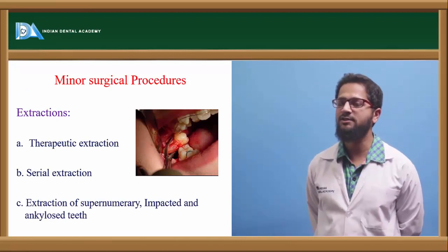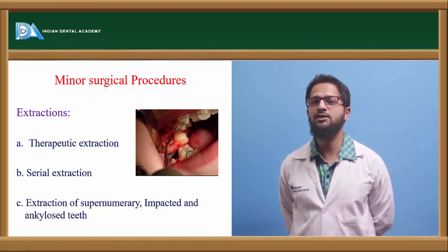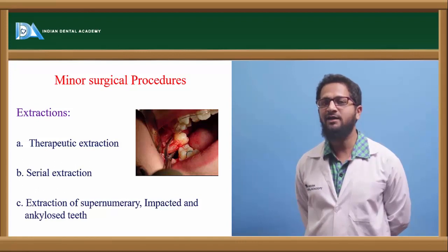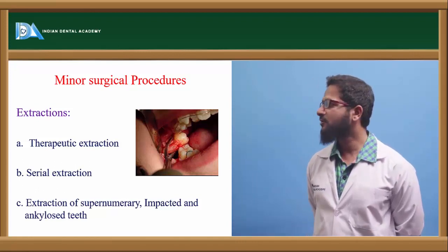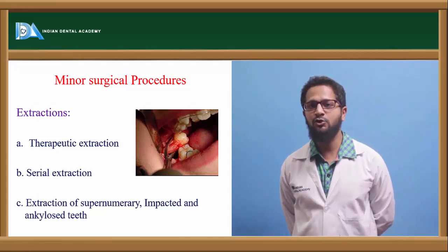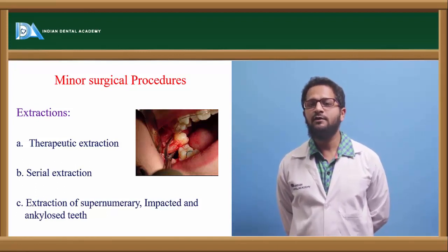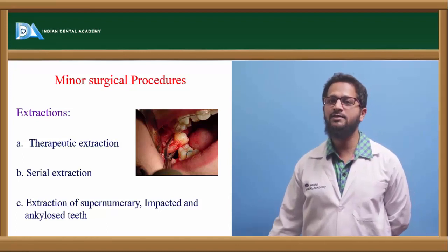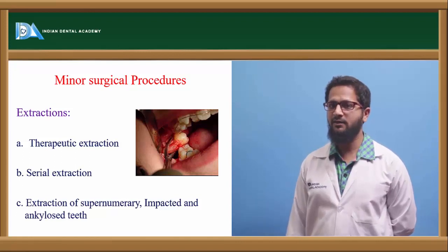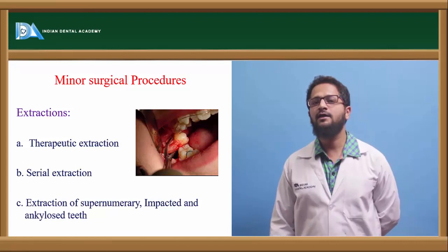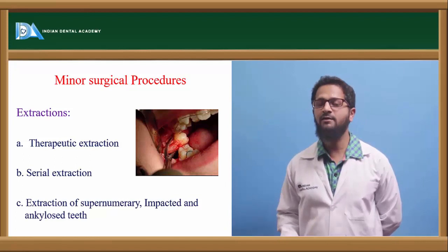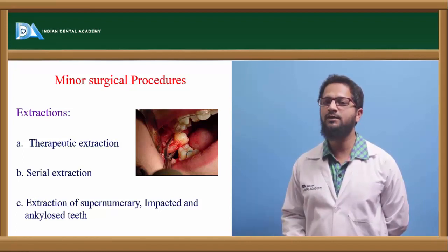Coming to minor surgical procedures — extractions. Extractions are one of the most commonly done minor surgical procedures in conjunction with orthodontic therapy. Various types include therapeutic extractions, serial extractions, and extractions of impacted, supernumerary, and ankylosed teeth. Therapeutic extractions are done to gain space, most commonly when there is crowding. The required amount of teeth are extracted after calculating how much space is needed. Before doing therapeutic extractions, complete pre-extraction evaluation must be done, and the labial and buccal vital plates should be preserved with as atraumatic an extraction as possible, so that post-extraction tooth movement is not affected.